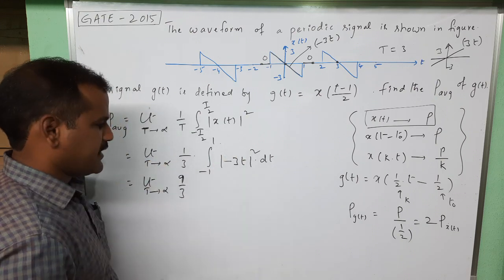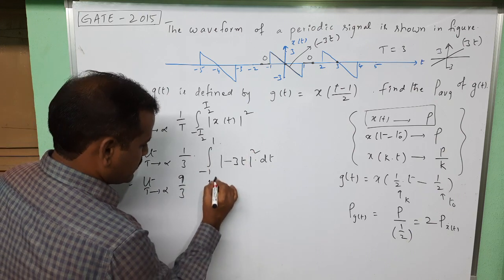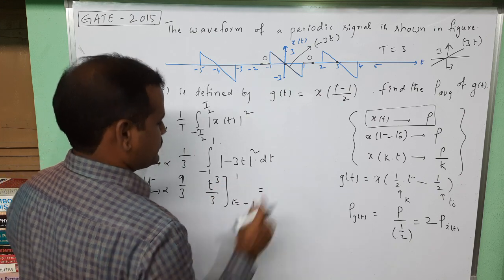Let us take the 9 outside. The t² integration is t³/3 with the limits minus 1 to plus 1.